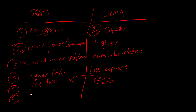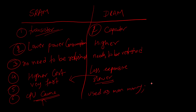SRAM is used for CPU cache memory. In the DRAM scenario, it is used as main memory. Examples of DRAM include DDR, DDR2, and DDR3 — these are versions of Dynamic RAM.